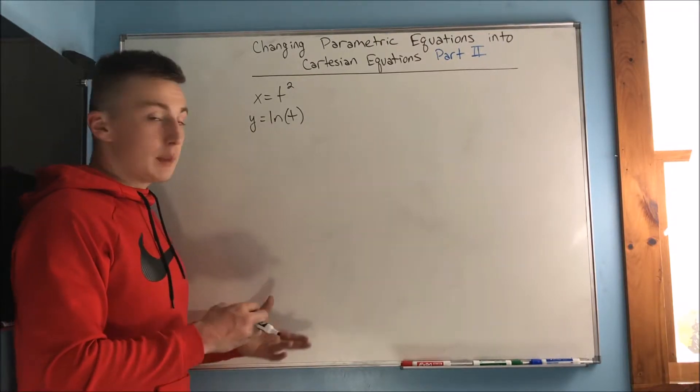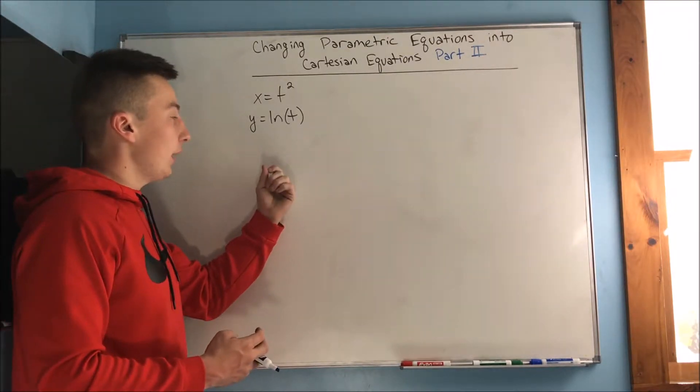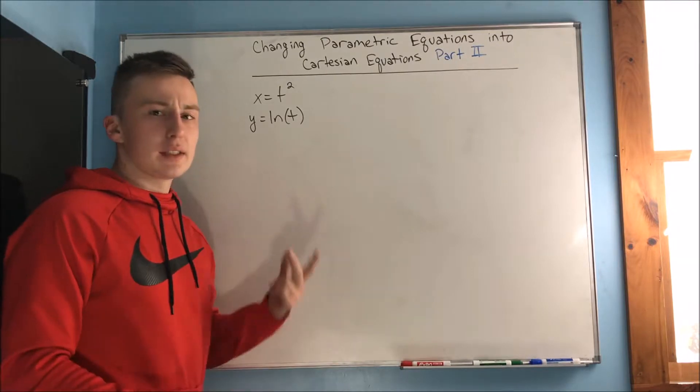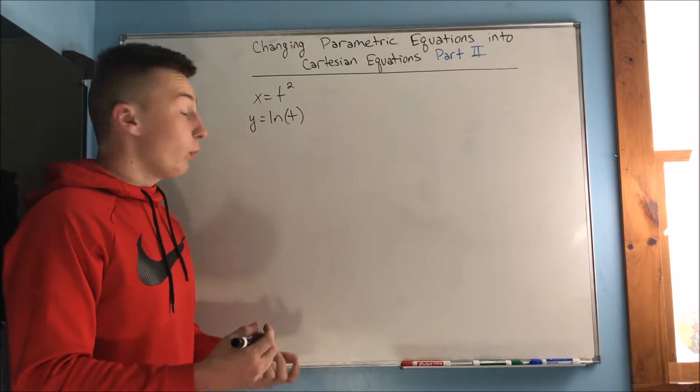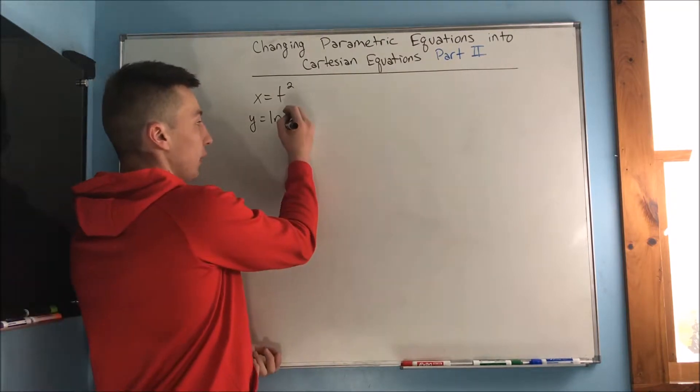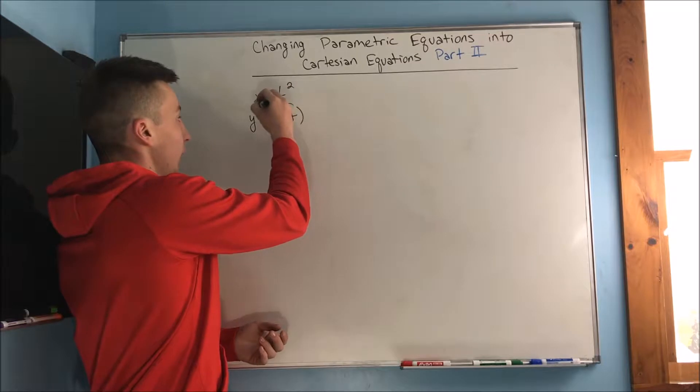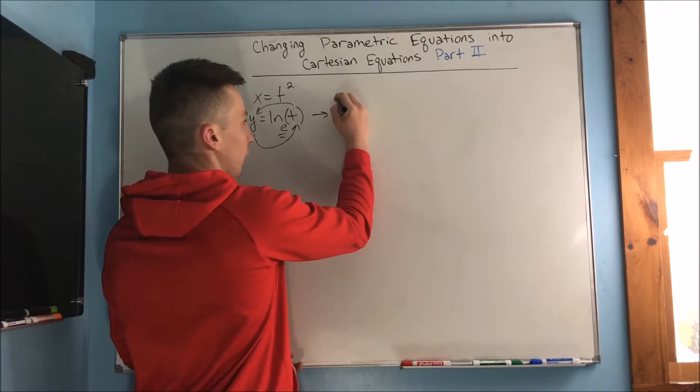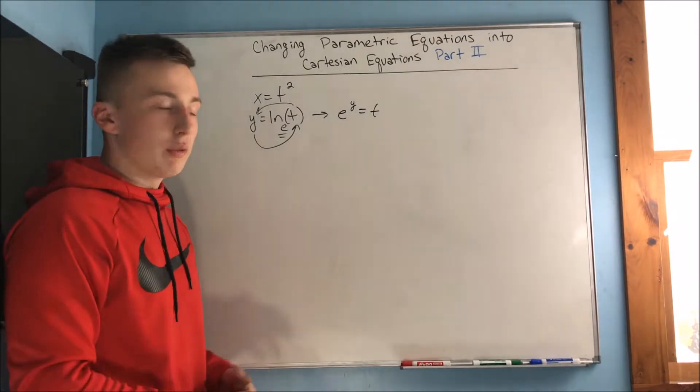The hardest part about trying to get this into a Cartesian equation is the fact that we have this natural log of t here. That's kind of messing this up—I don't really know how to relate that with t squared. Well, we can rewrite this. We know that natural log has a base of e, so if we move the t here, the y here, and make the e bigger we end up with e to the y equals t.